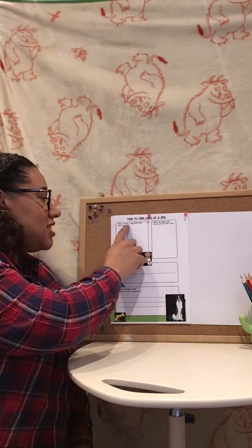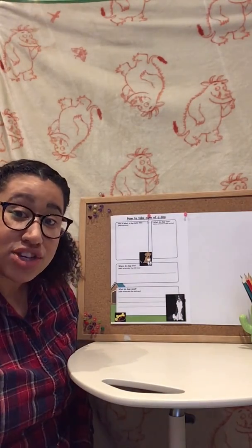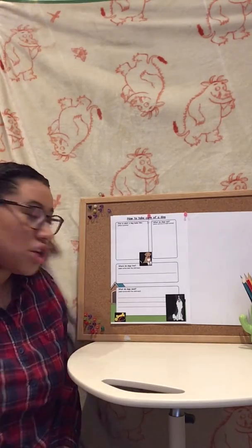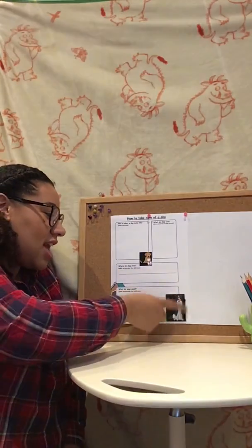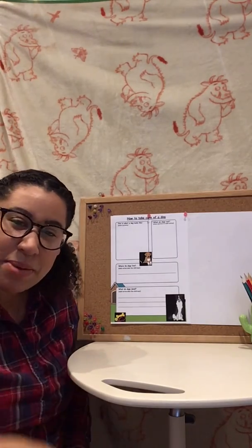So the first one says 'This is what a dog looks like.' In this box here you can have a go drawing a dog. It doesn't have to be a big dog, it can be a little dog, it can be any dog that you want. You can have a look at the pictures of the dogs on here, you can have a look at the dogs on Google, you can have a go drawing Toby if you really want to.